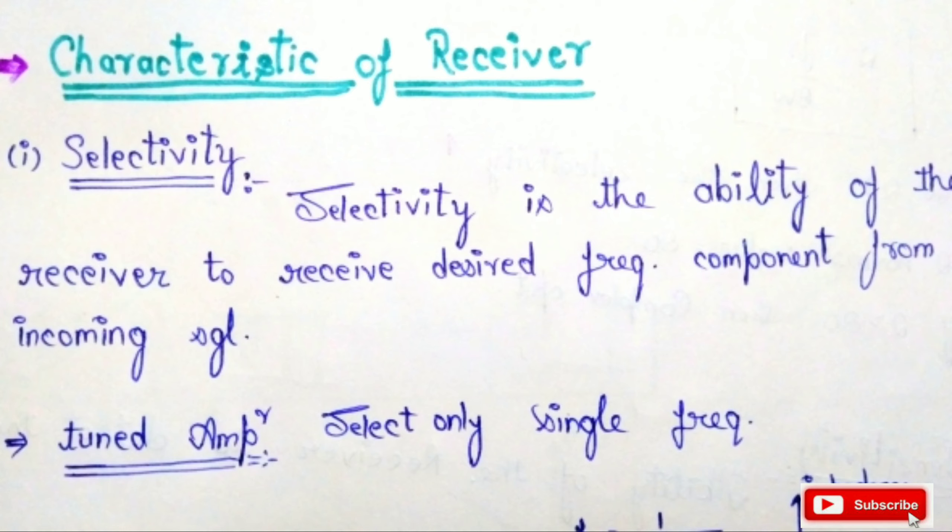The first property is selectivity. Selectivity is the ability of the receiver to receive a desired frequency component from the incoming signal. For example, for the FM radio,